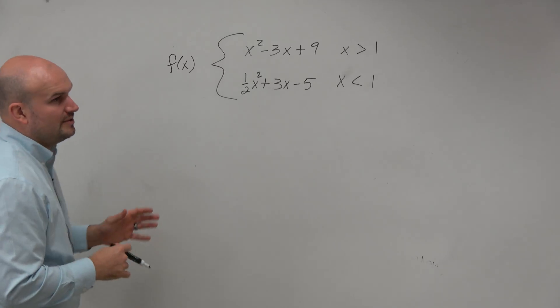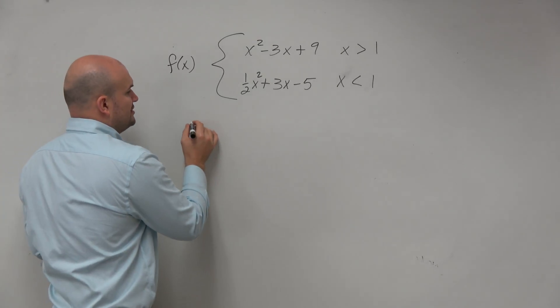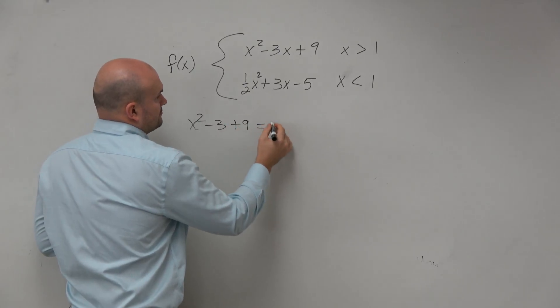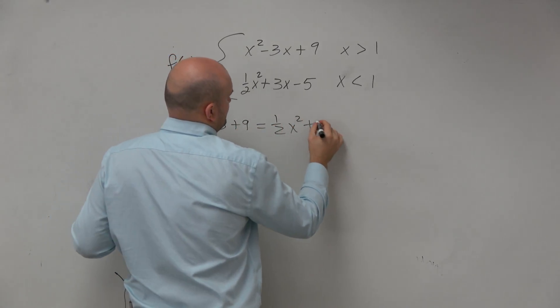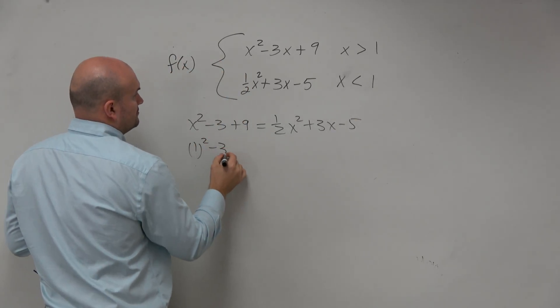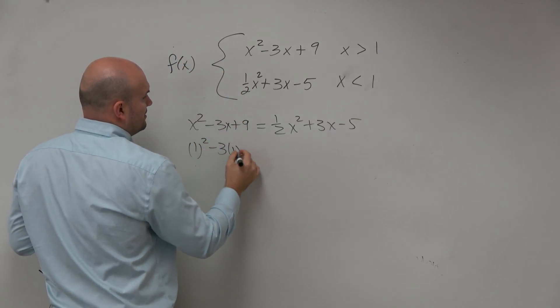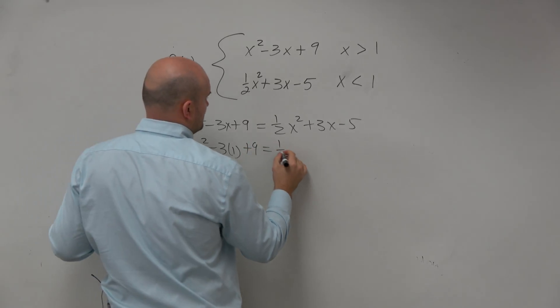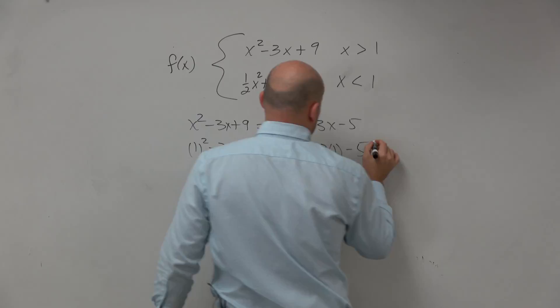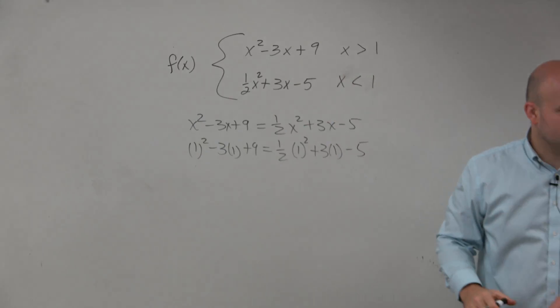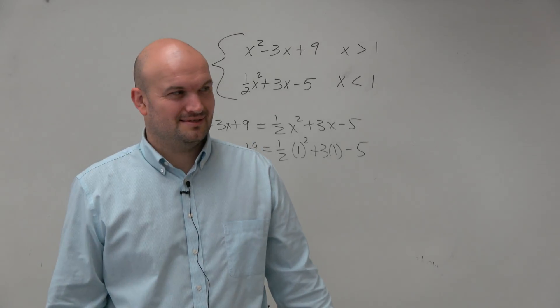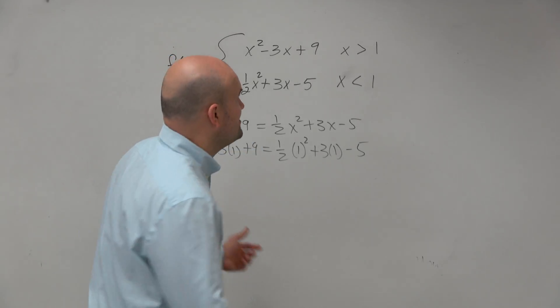The first thing I notice here is we could obviously go ahead and set them equal to each other, and then you'd plug in the 1. But this is actually all a waste of time for this problem. Because before I even do the math, there's something I notice about this problem. Does anybody see it? Yeah, there's no equal sign.